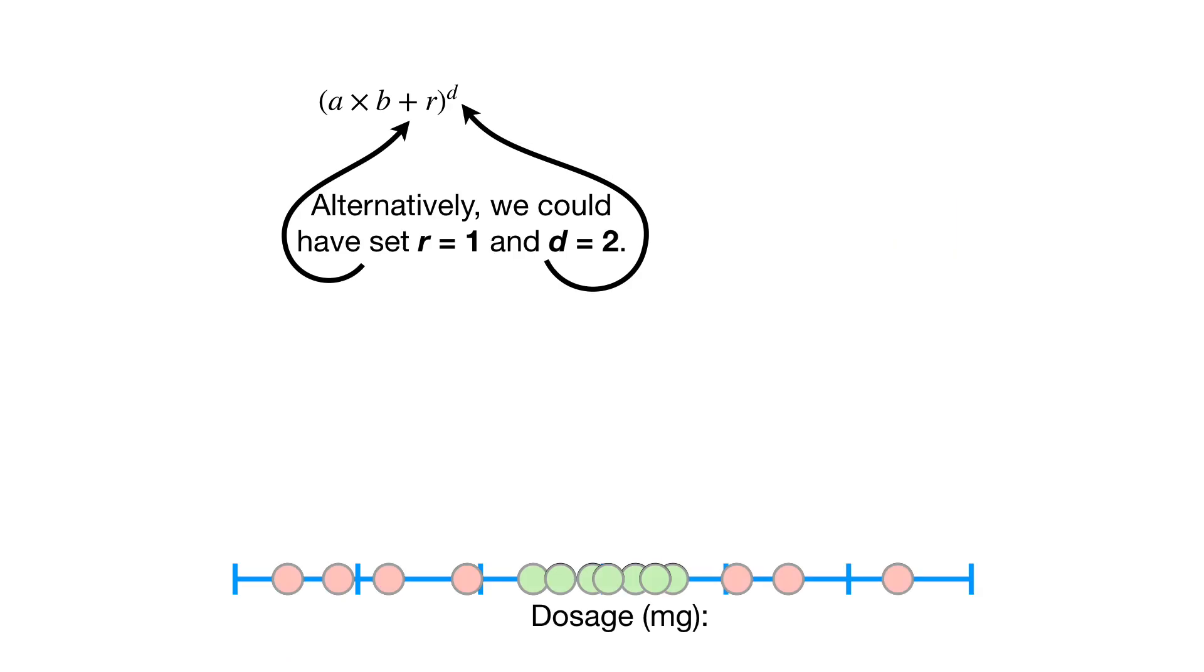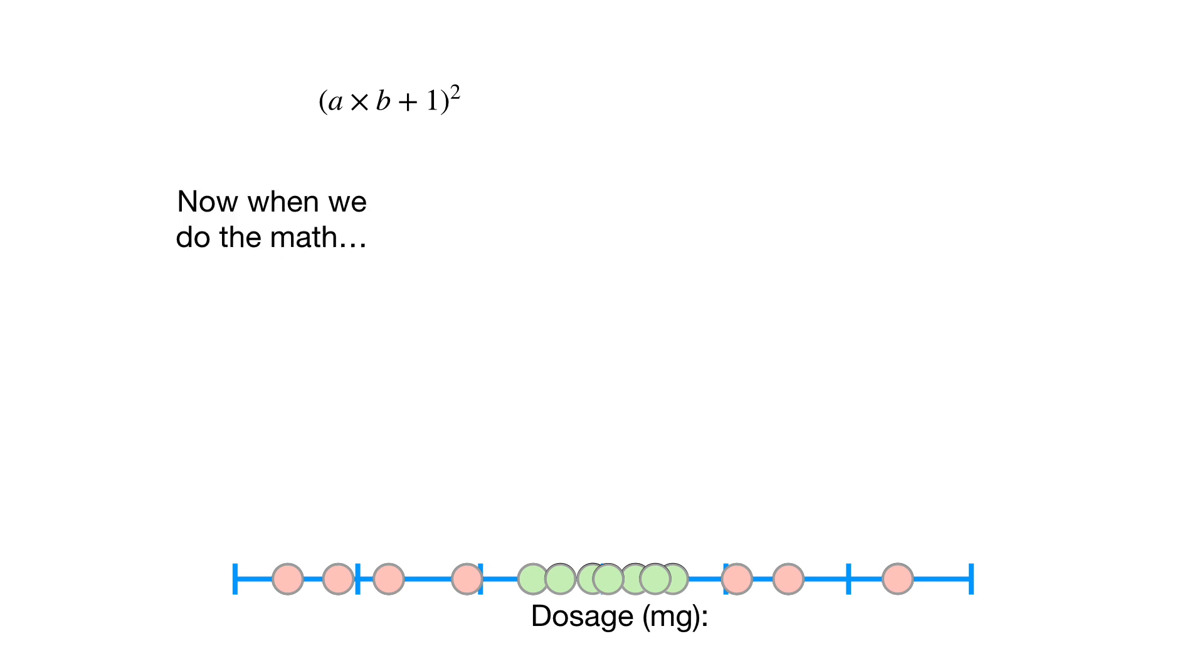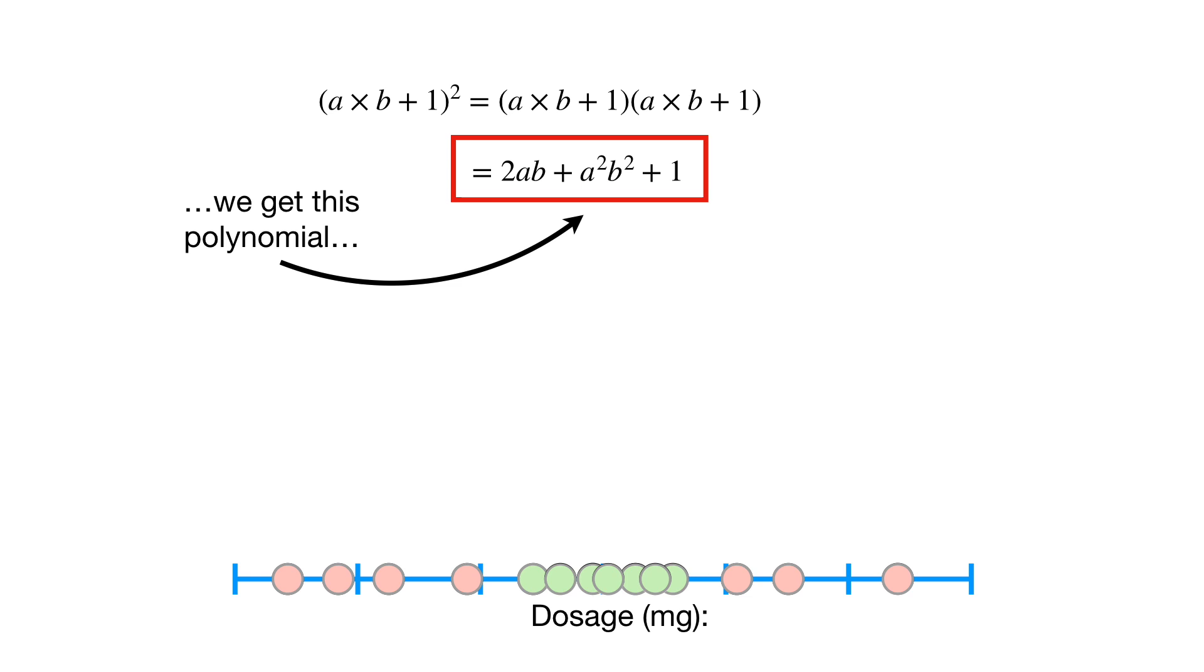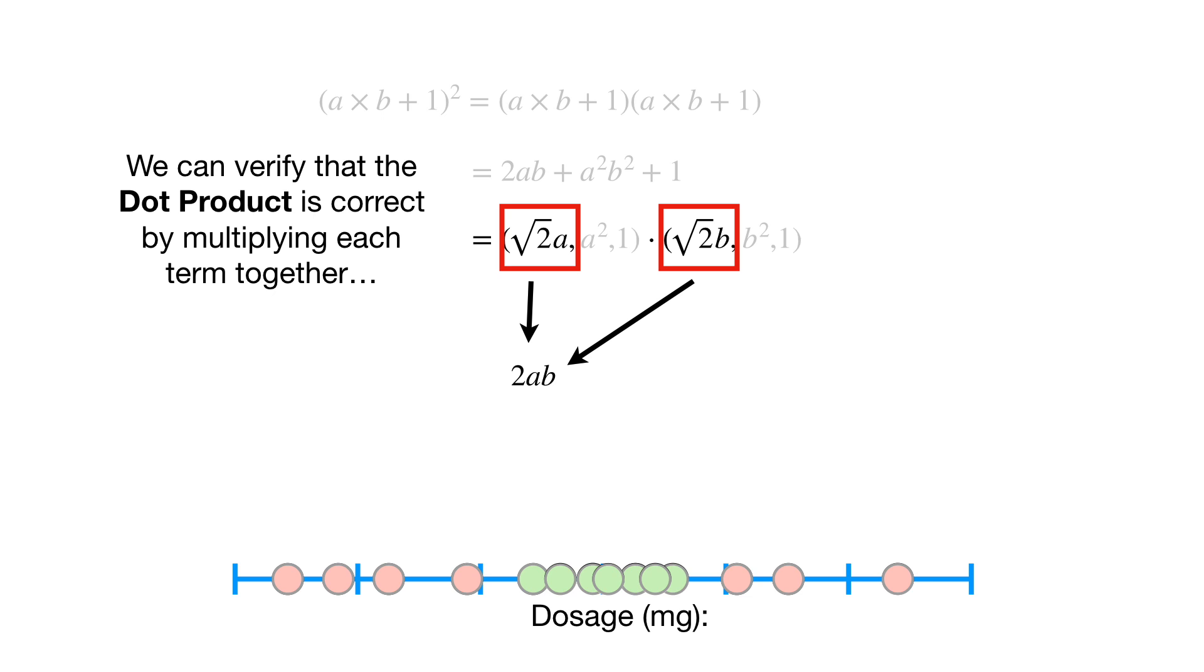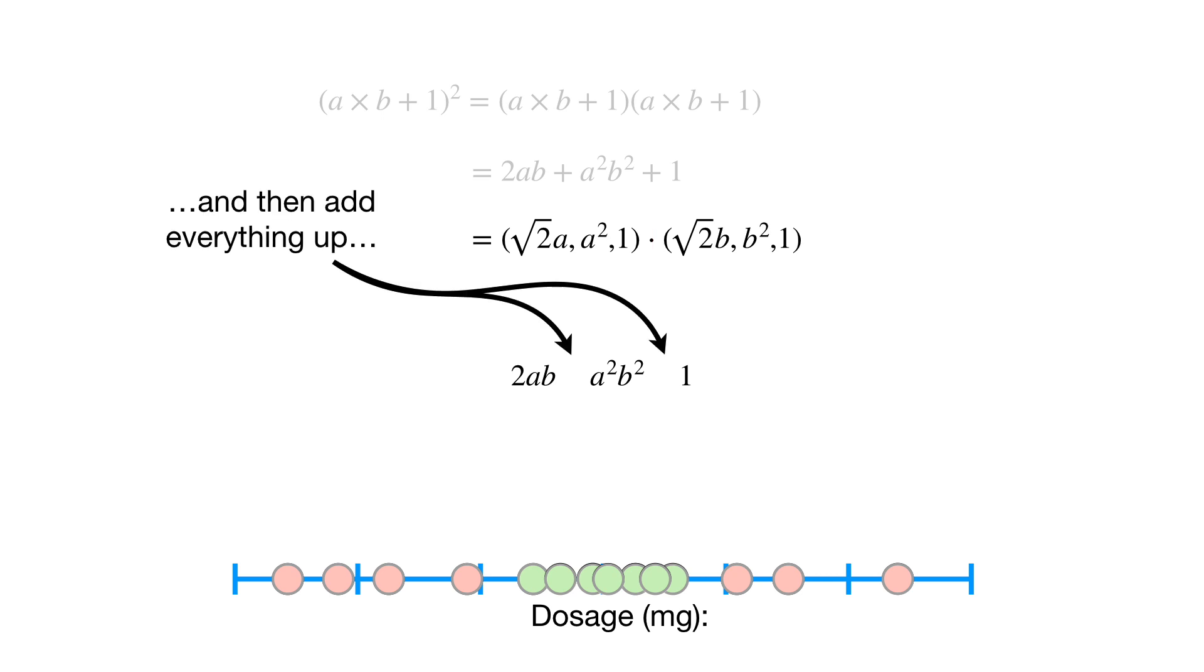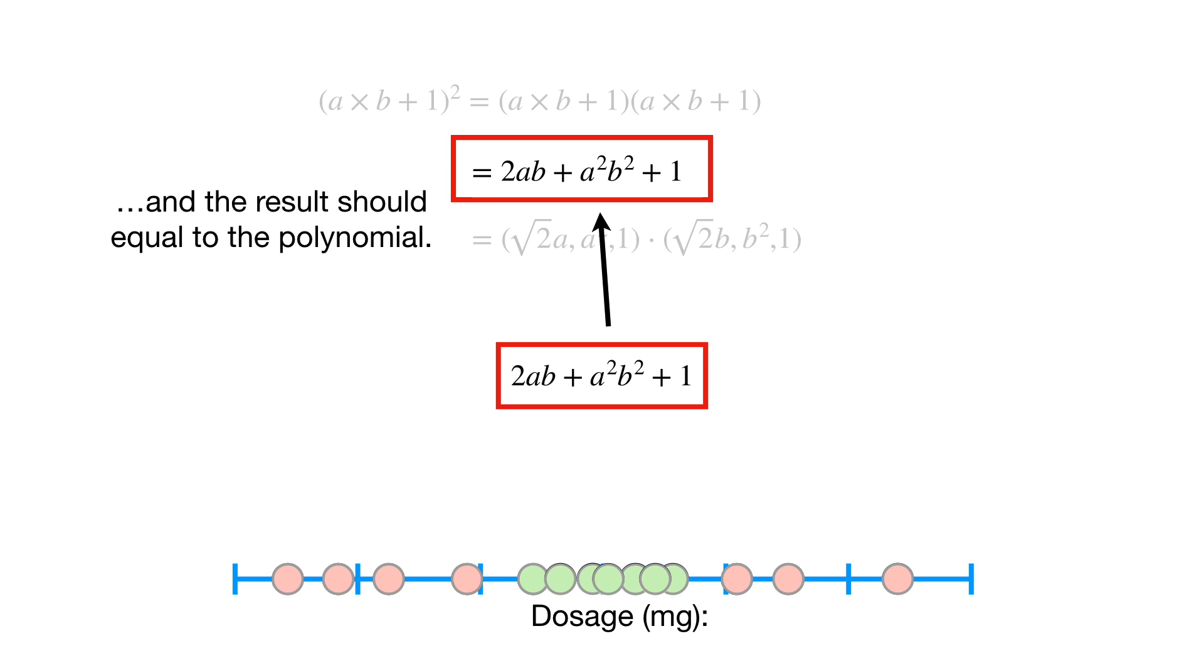Alternatively, we could have set R equals 1 and D equals 2. Now when we do the math, we get this polynomial and this dot product. We can verify that the dot product is correct by multiplying each term together, and then add everything up, and the result should be equal to the polynomial.